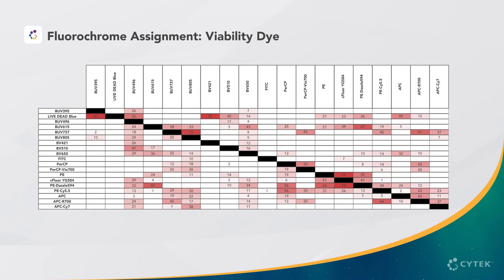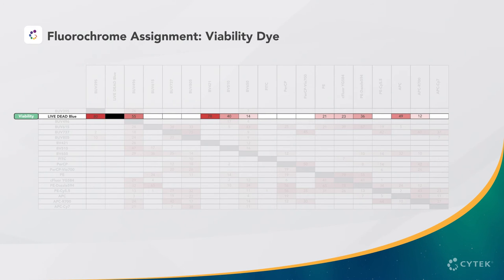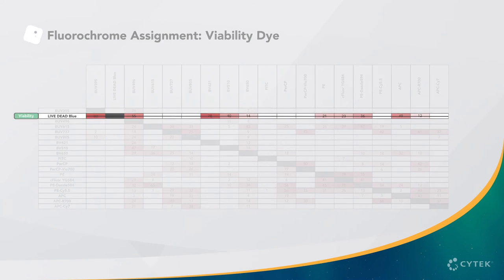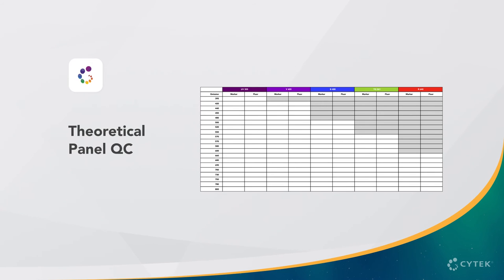Finally, we can assign the viability dye. In this case, we'll use Live/Dead Blue. As long as the viability dye is properly titrated, we won't need to worry about spread because we will be gating out any dead cells that stain positive for this dye. With all markers assigned to fluorochromes, we can proceed to a final theoretical panel QC.